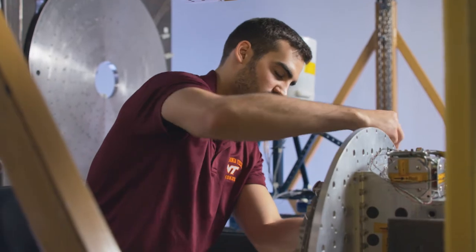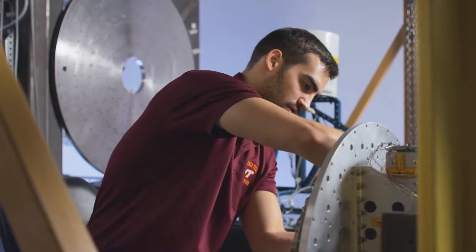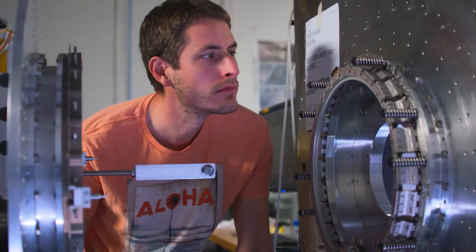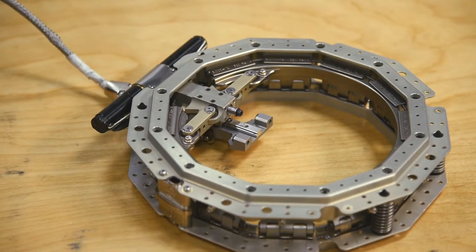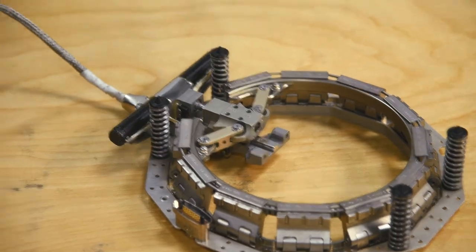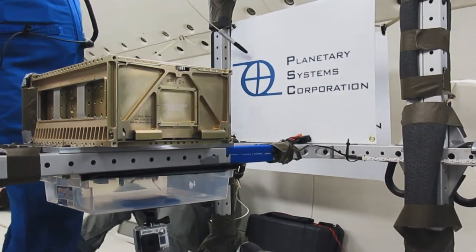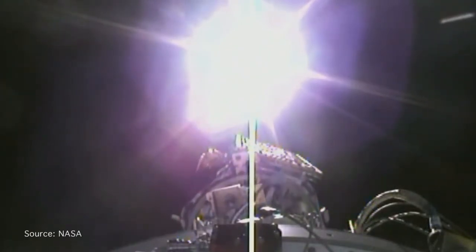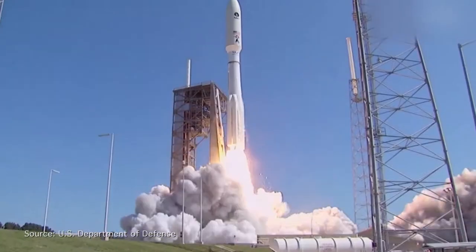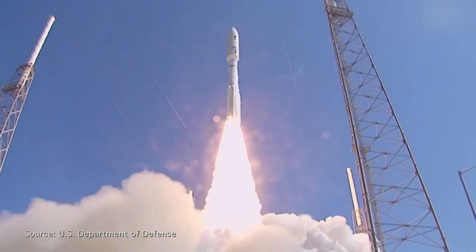With support from the Air Force Small Business Innovation Research program, Planetary Systems Corporation developed a lighter-weight, lower-shock separation system called Light Band, and a small canisterized satellite dispenser, or CSD. Between them, Light Bands and CSDs increase reliability, reduce liftoff weight, and save money.